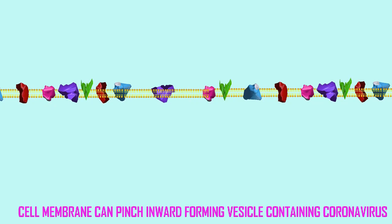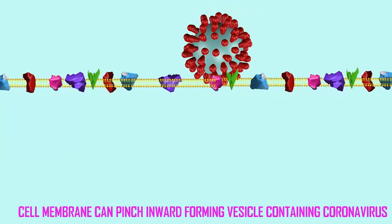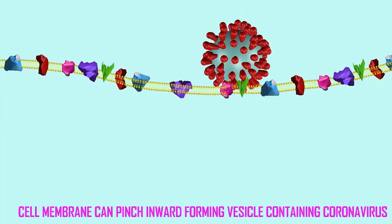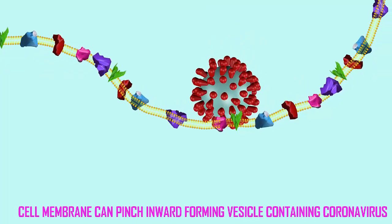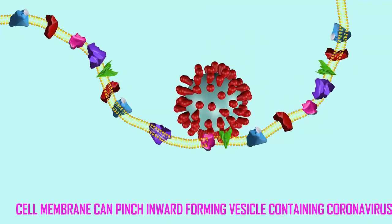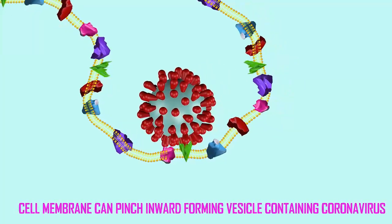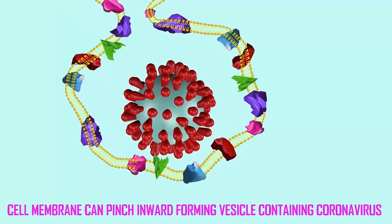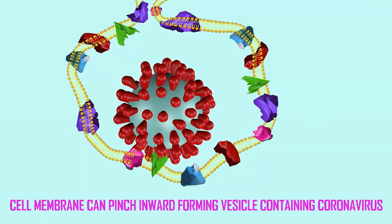Many viruses use this endocytic vesicle as the membrane with which they fuse. One of the reasons is that as the endosome is processed inside the cell, its pH can be lowered. And for some viruses, it is this change in pH which is one of the triggers that allows for the fusion of membranes.